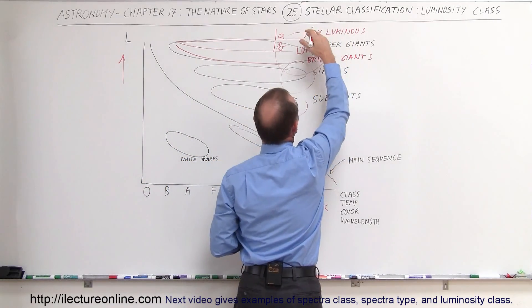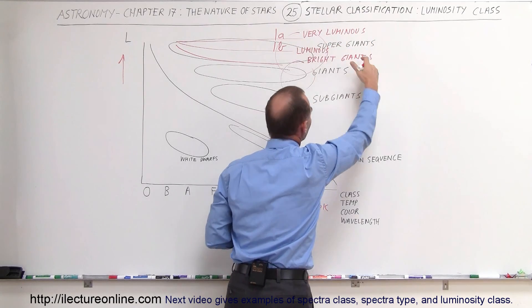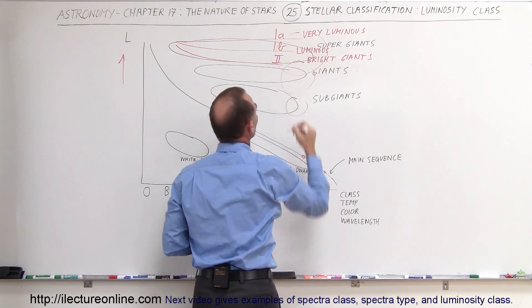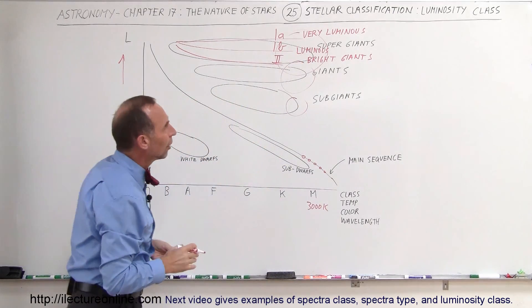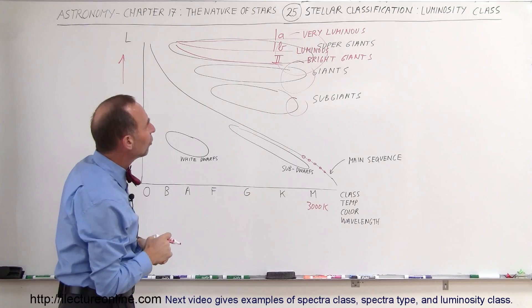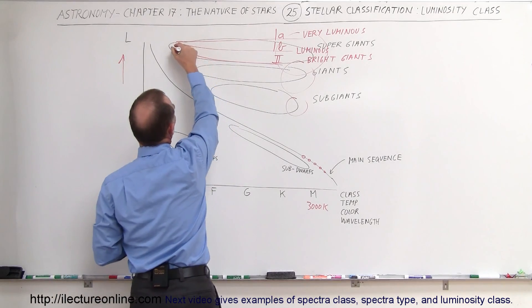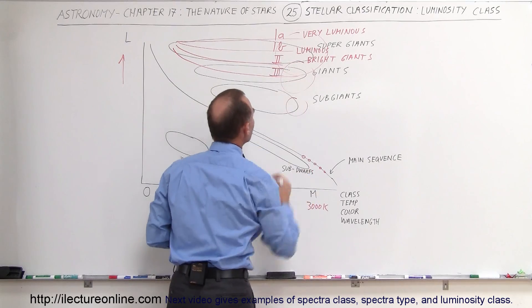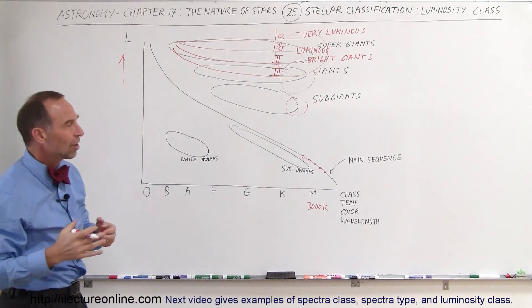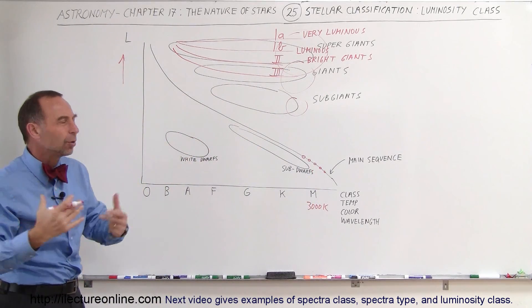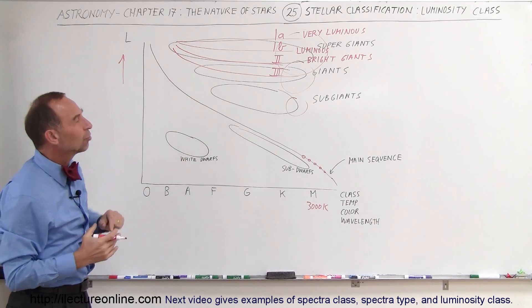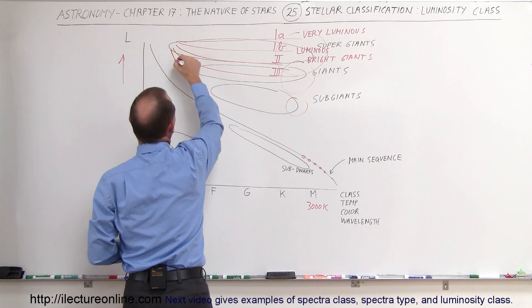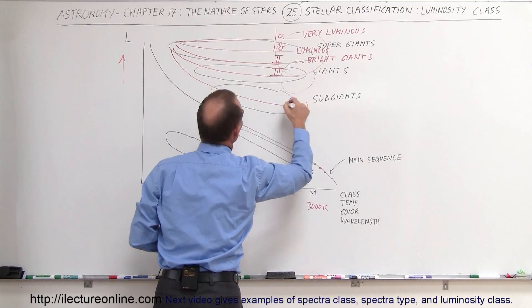Then we had the class which we called the regular type of giants, so that was luminosity class III. And then we had a class of giants which were not quite as big as a typical red giant but they were much bigger than the main sequence stars. So we called them subgiants, and those also could be recognized as having a different spectrum. We called that luminosity class IV for the subgiants.